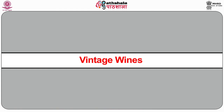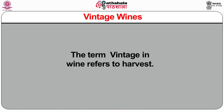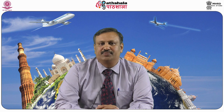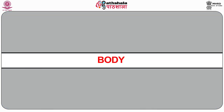Vintage wines: the term vintage in wine refers to harvest, meaning the year of production, which sometimes features on a collar around the neck of the bottle. It is optional for both AOC wines and Vins de Pays wines, but almost all producers mention it. If the vintage is specified, at least 85% of the wine must come from the year indicated. Non-vintage wines are blended wines. Wine can also be classified on the basis of body.